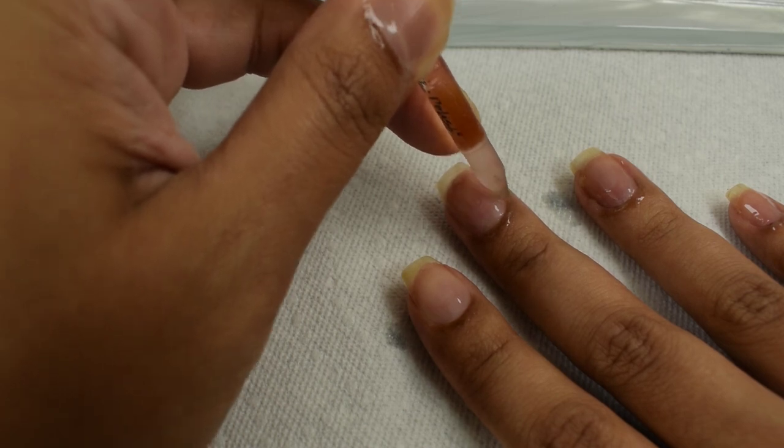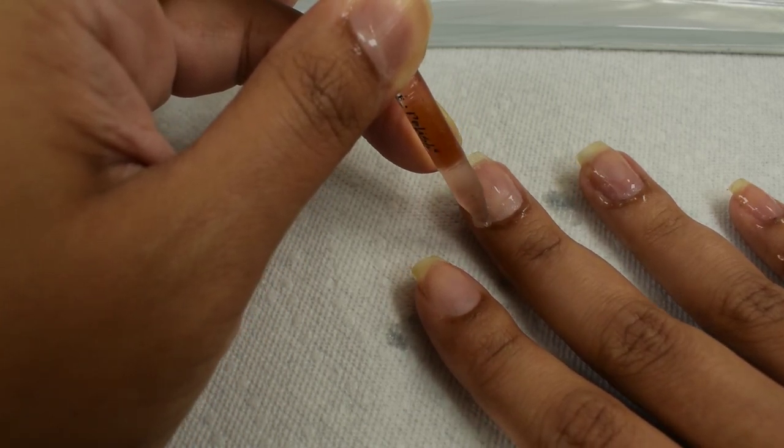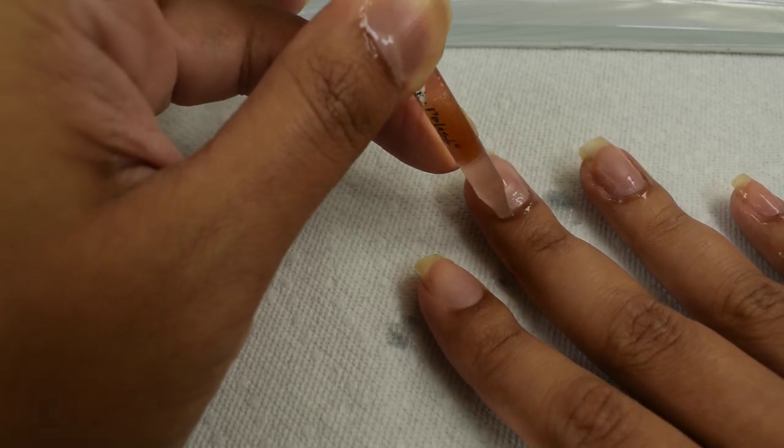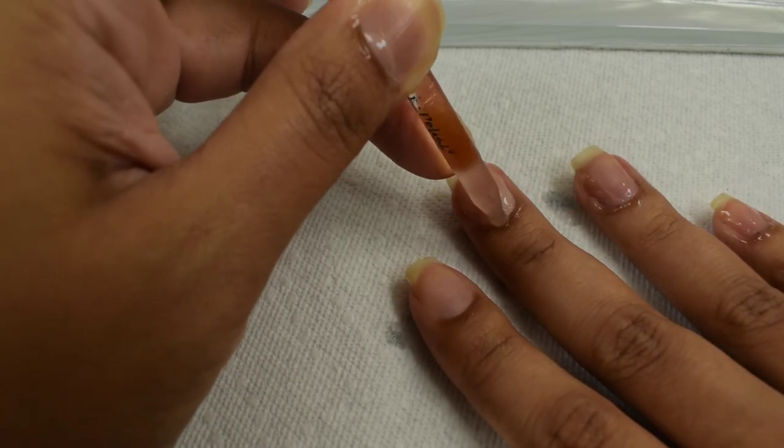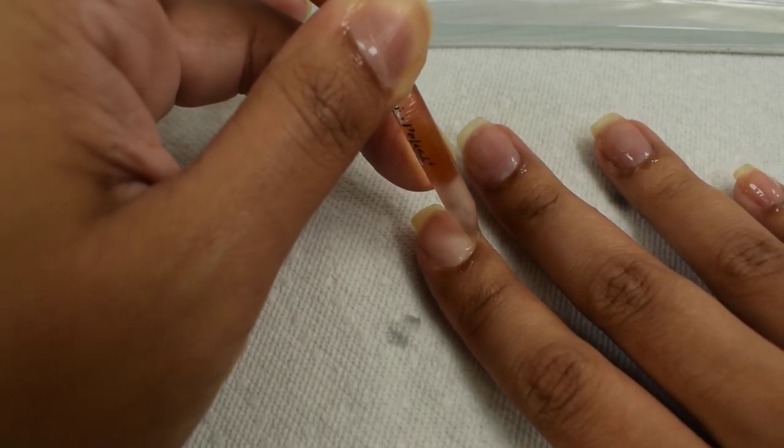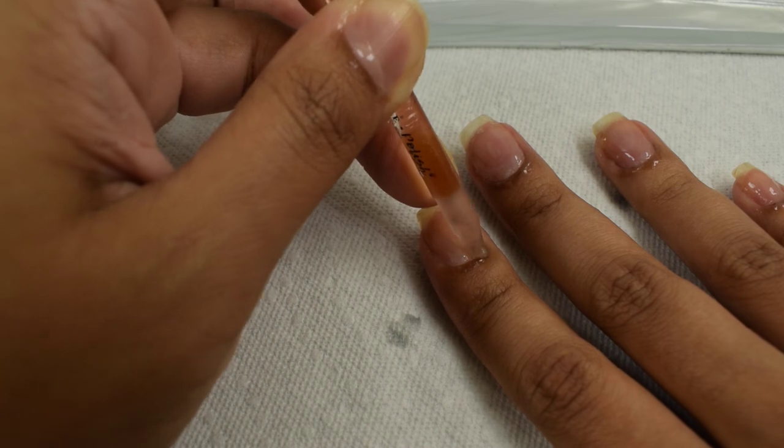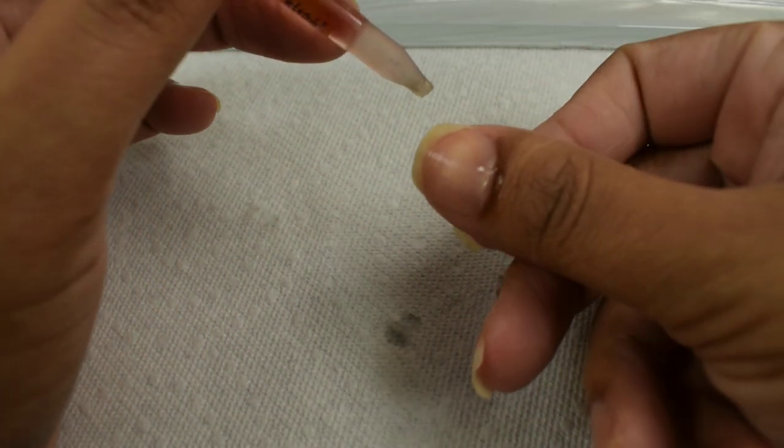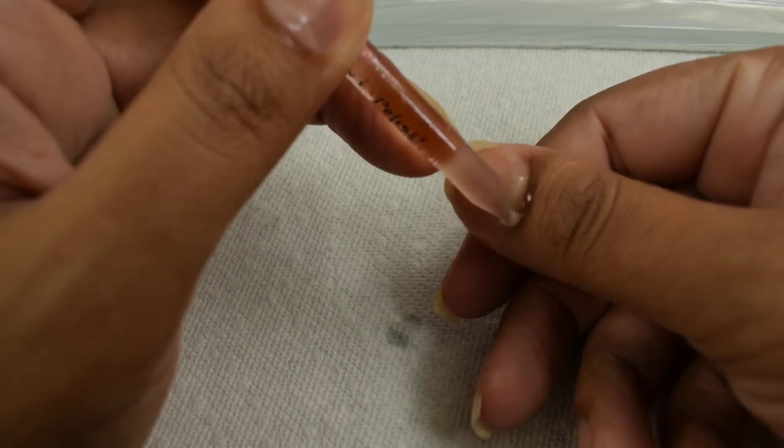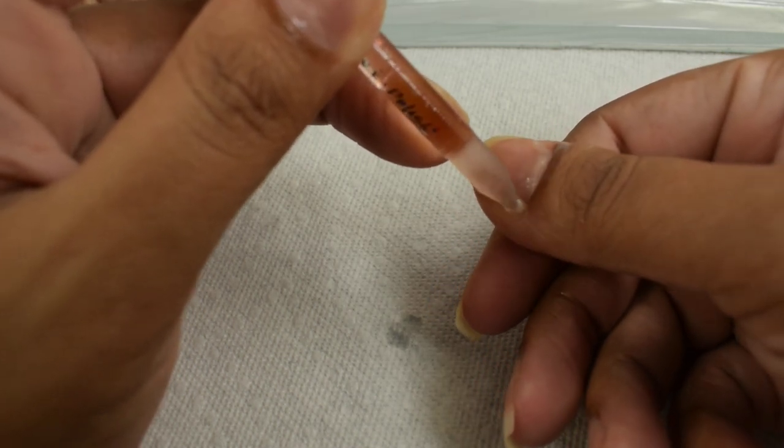The reason why I typically reach for this specific cuticle remover is because it's pretty harsh. It's pretty strong. And again, it's 30 seconds for cuticle removal. And as you can see, as I'm gently scraping the sides of my skin here, it is pretty harsh. There's quite a bit of excess that comes up.